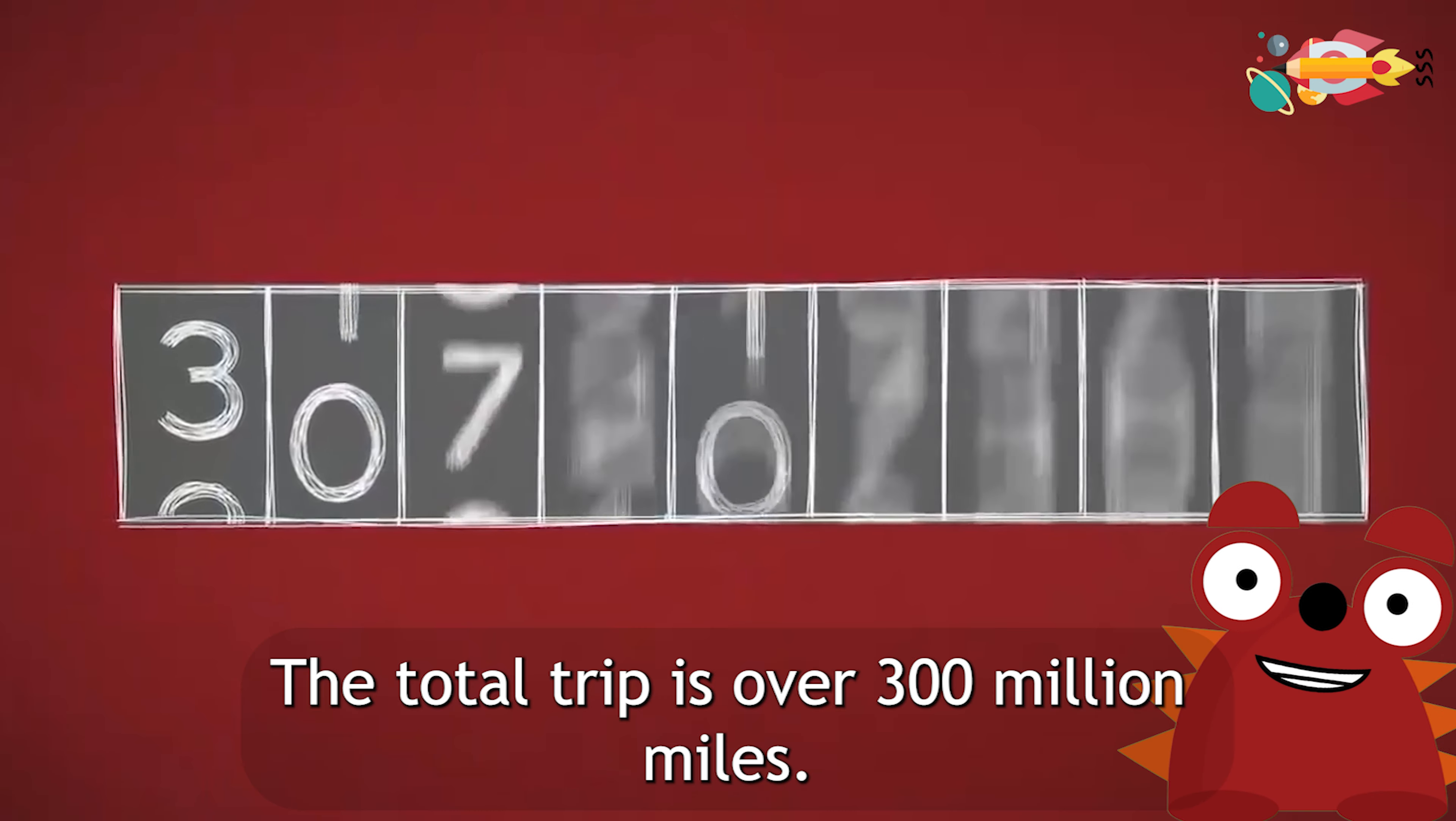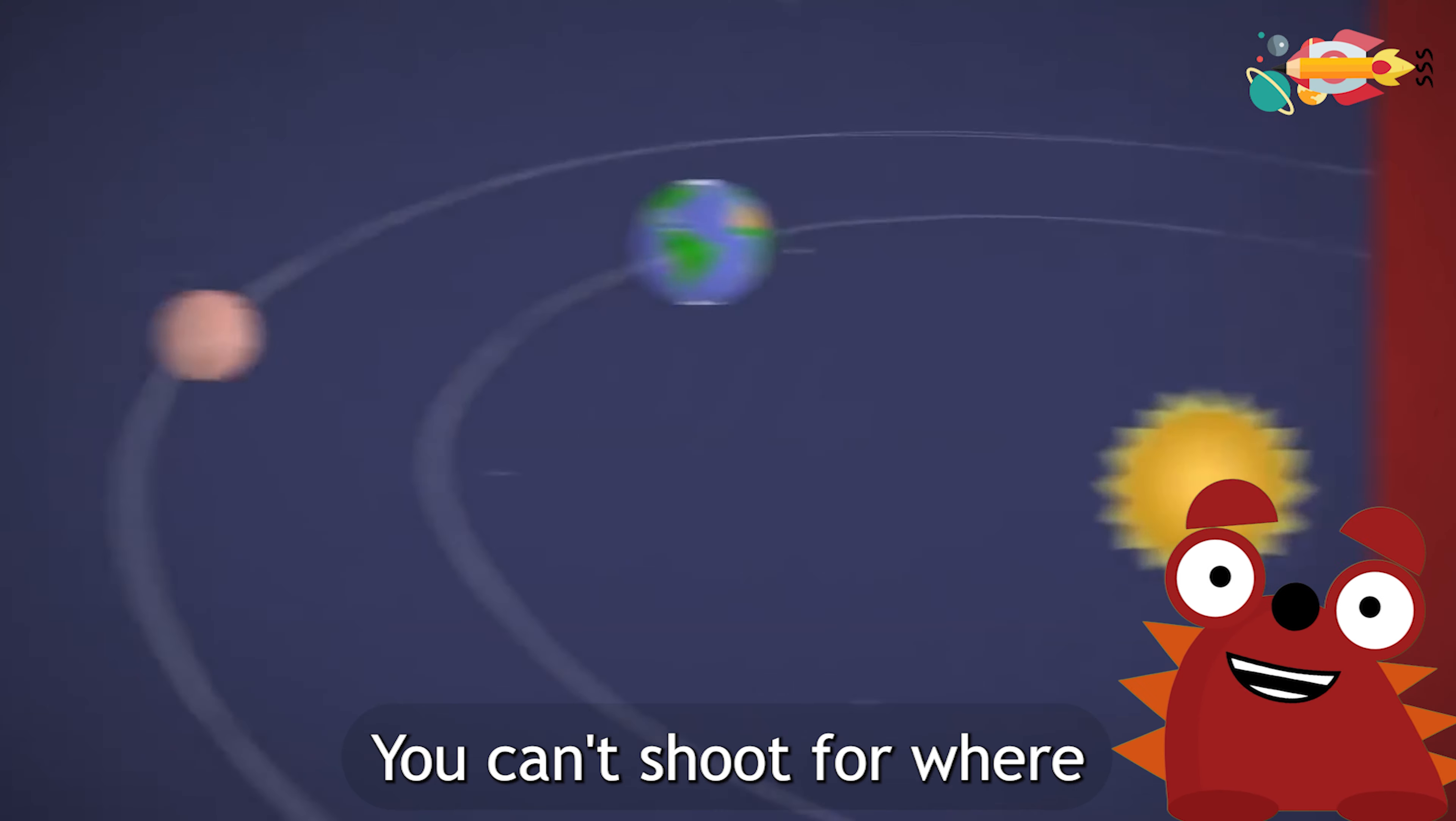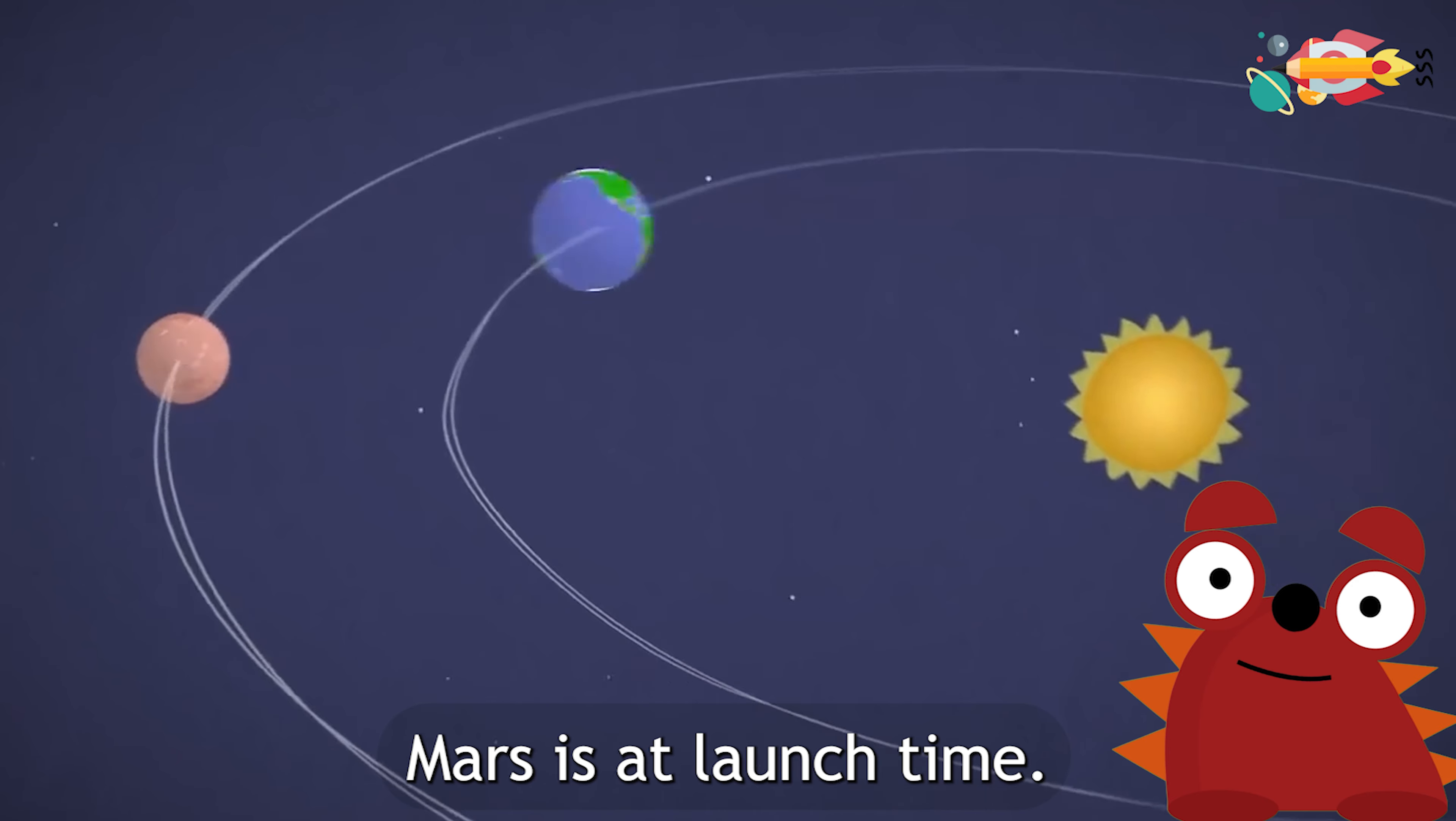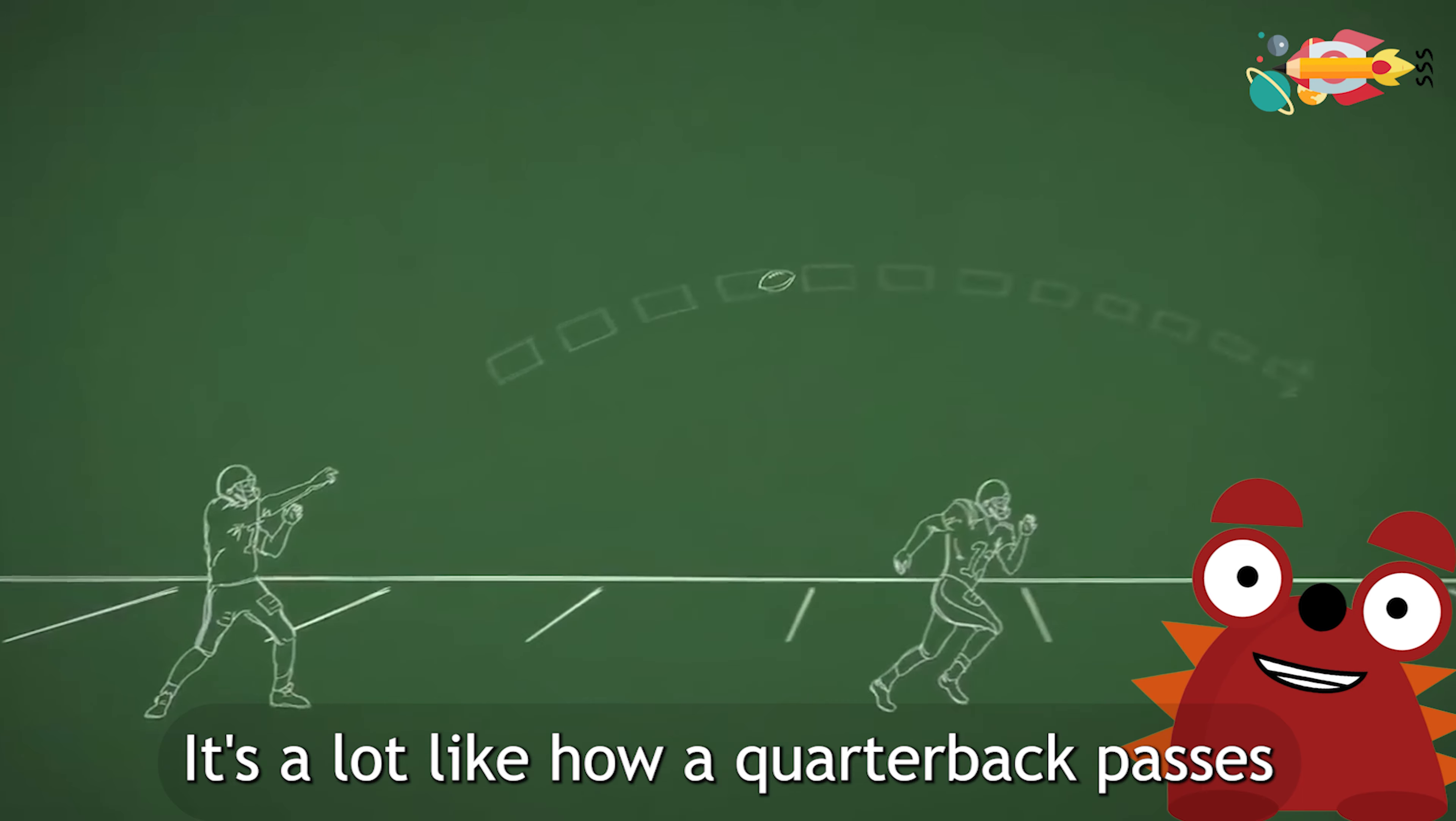That's important. The total trip is over 300 million miles. Finally, make sure your aim is right. You can't shoot for where Mars is at launch time. You have to aim for where it will be when you get there. It's a lot like how a quarterback passes a football.